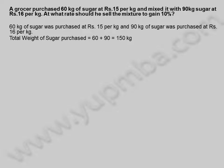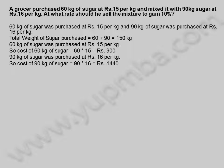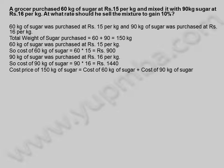Total weight of sugar purchased is equal to 60 plus 90, which equals 150 kilograms. Cost of 60 kilograms of sugar is equal to 60 into 15, which equals 900 rupees. Cost of 90 kilograms of sugar is equal to 90 into 16, which equals 1,440 rupees.